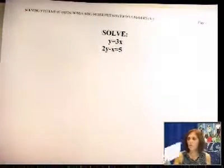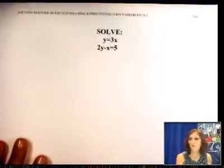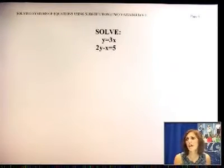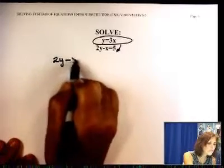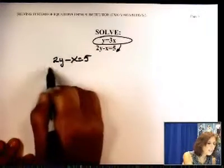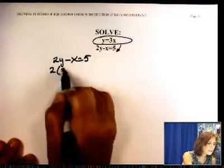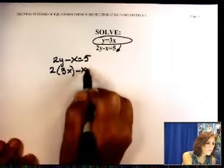Let's do one other problem. y equals 3x. 2y minus x equals 5. Here's the first equation. It's already done for you. So let's put it in the second one. So I have 2y minus x equals 5. Instead of y, I will put 3x. And solve for x.